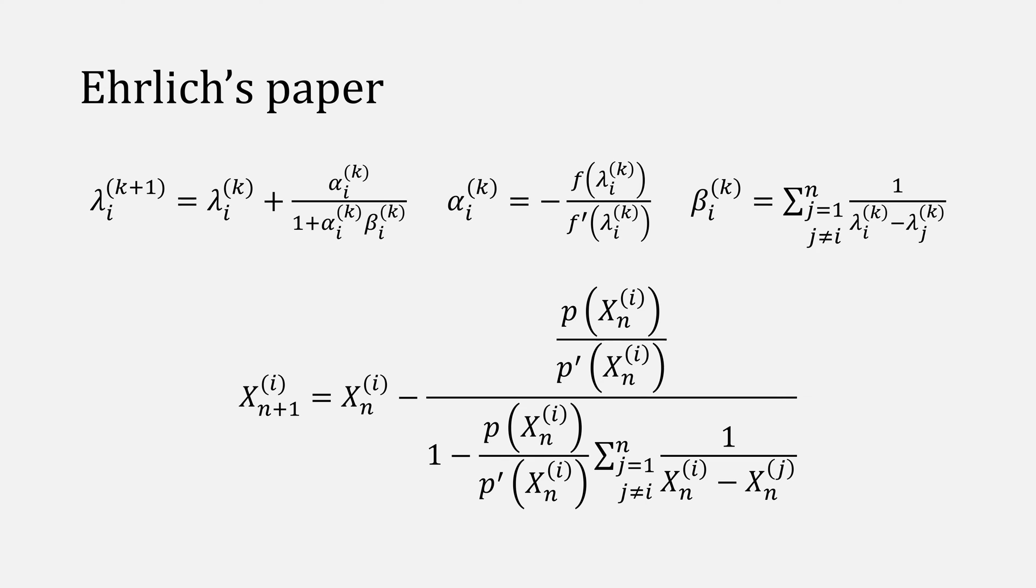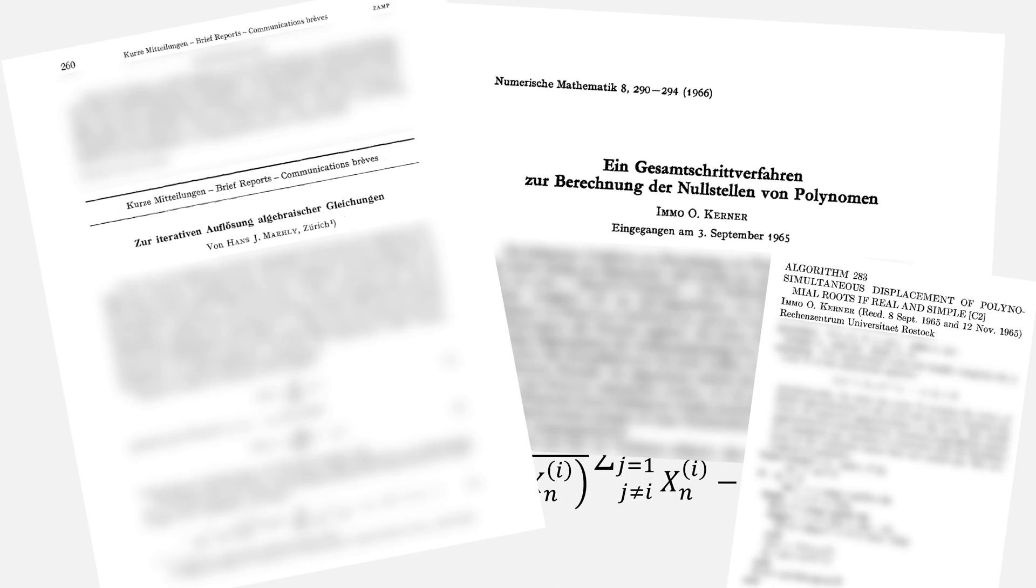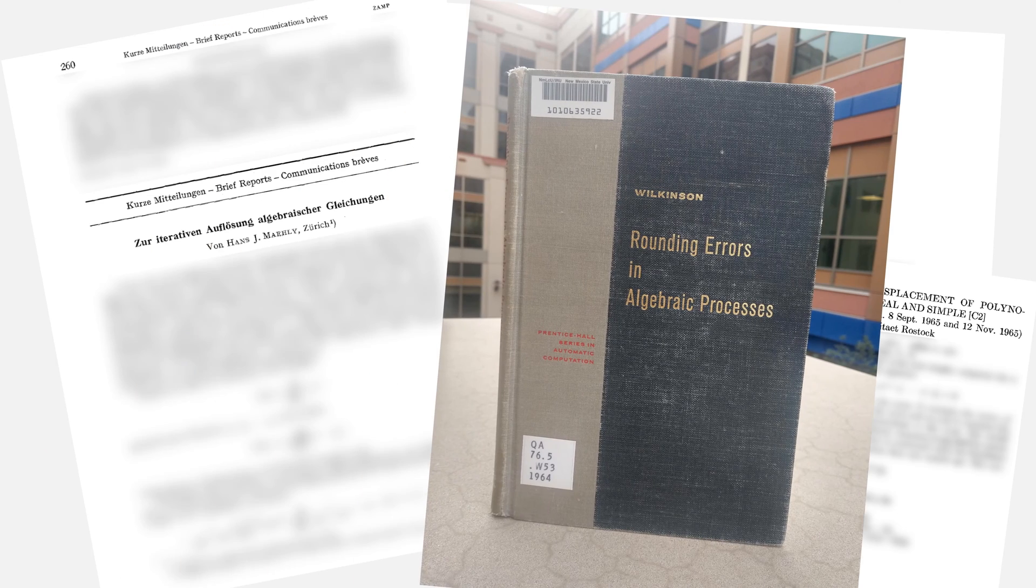His two-page paper cites five sources. Two of them are Kerner, one is in German by Mele, another is Wilkinson's Rounding Errors in Algebraic Processes, and the last is a paper on error bounds by Borsch.